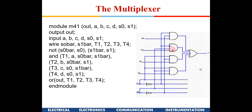Similarly, if the control is zero-one, that AND gate is activated; for one-zero, the corresponding AND gate is activated; and for one-one, the last AND gate is activated. So one of the data inputs gets routed towards the output. This program is written as gate-level modeling.